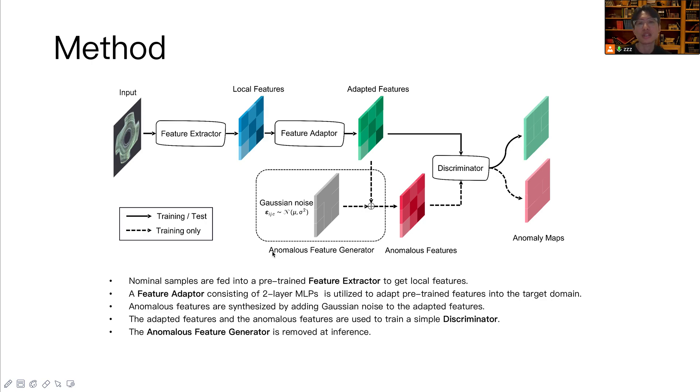And a training time feature generator that generates out-of-domain features by simply adding random Gaussian noises to the adaptive features. Though we can think the normal features are distributed like a multi-dimensional Gaussian distribution, but we don't model such a distribution and compute the normal score on it. Because there could be multiple normal patterns in the sample, then we really need to model multiple multi-dimensional Gaussian distributions.